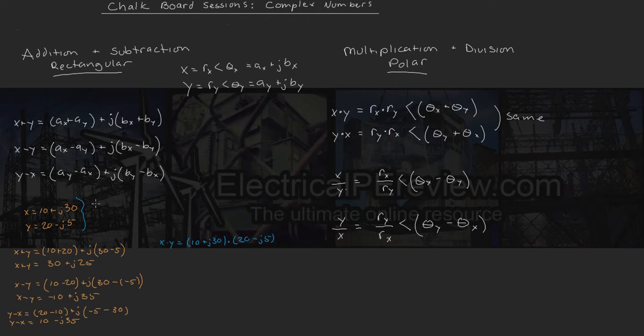So we carry that out using the methods we just demonstrated in the last video. And we've got x is going to equal 31.62 magnitude at an angle of 71.57 degrees. Y is going to equal the magnitude of 20.62 at an angle of negative 14.04 degrees.